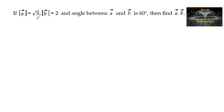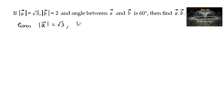If mod A is equal to root 3 and mod B is equal to 2, and the angle between two vectors A and B is 60 degrees, then find A dot B. So given: modulus of vector A is root 3, modulus of vector B is 2, and angle between two vectors theta is equal to 60 degrees.